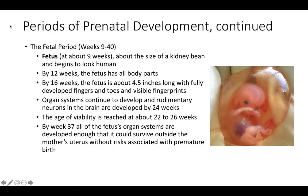The fetal period runs from nine weeks to forty. At nine weeks the fetus is about the size of a kidney bean and begins to look human. By 12 weeks it has all body parts; by 16 weeks it is about four and a half inches long with fully developed fingers and toes and visible fingerprints. Organ systems continue to develop, and rudimentary neurons in the brain are developed by 24 weeks. The age of viability is reached at about 22 to 26 weeks. By week 37, all organ systems are developed enough that the fetus could survive outside the uterus without risks associated with premature birth.